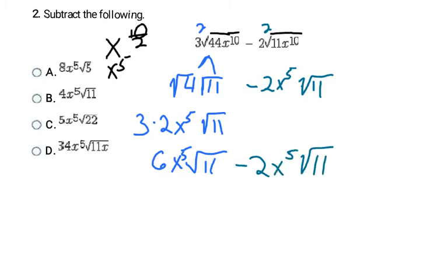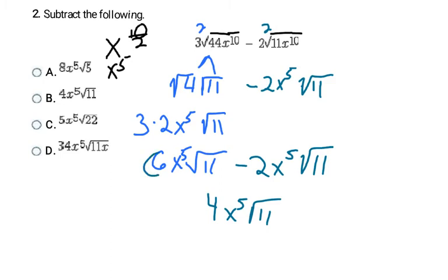Both terms now have the same variable with the same exponent and the same number under the radical, so they are like terms. We subtract just the outside numbers: 6 minus 2 is 4. The x⁵√11 carries through, giving a final answer of 4x⁵√11, which is letter B.